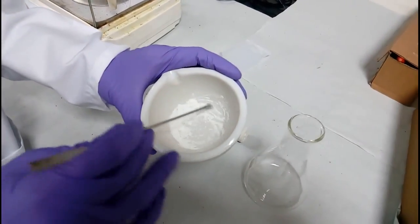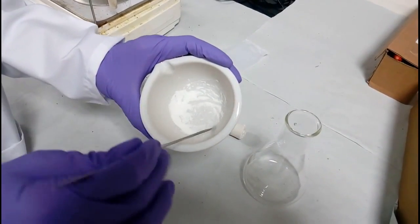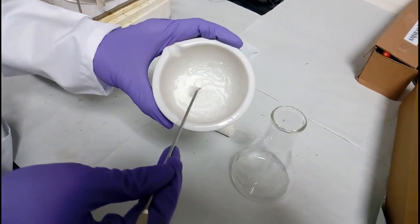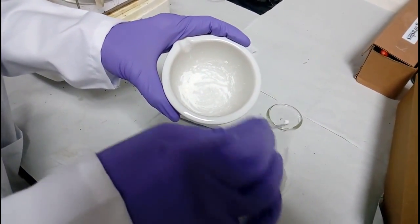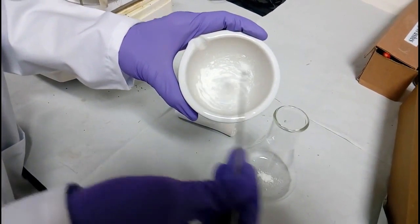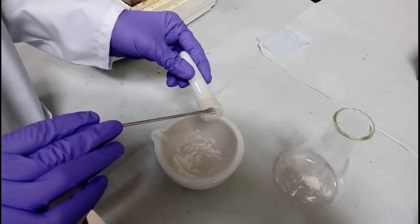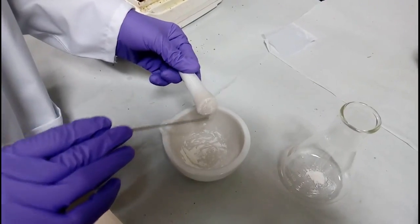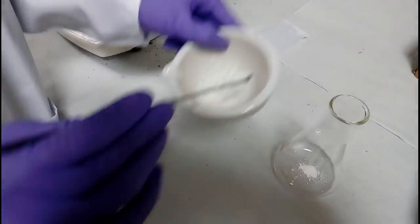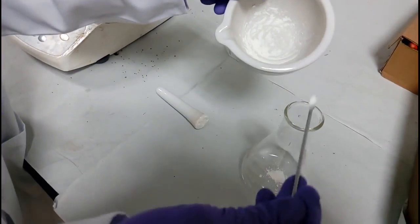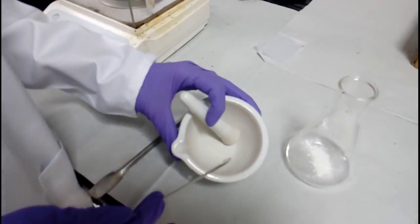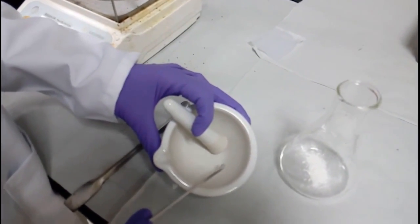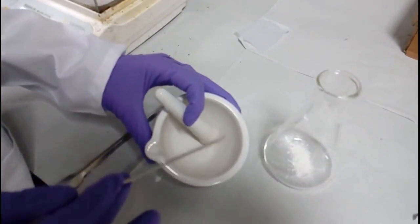Transfer this fine powder to a 250 ml conical flask using a spatula. Make sure that the complete powder of the tablet is transferred into the conical flask.